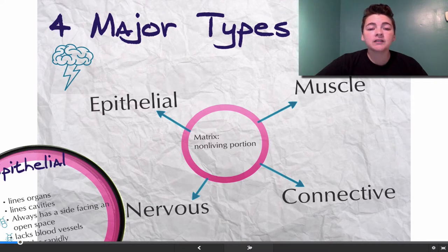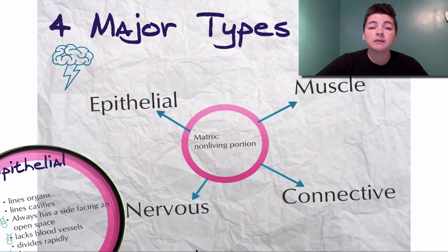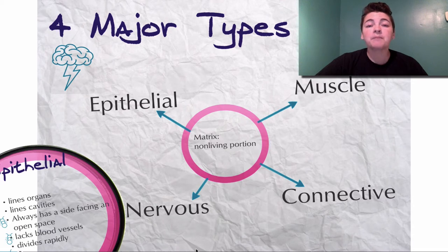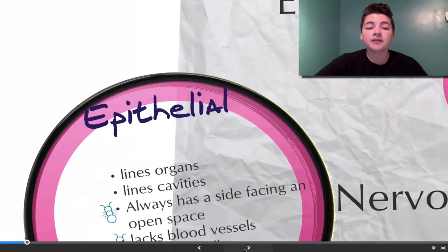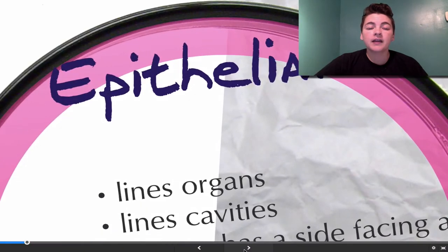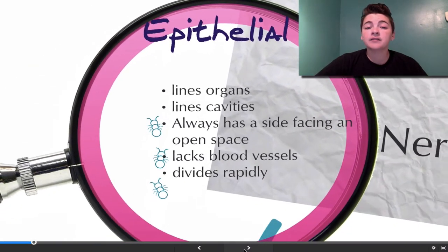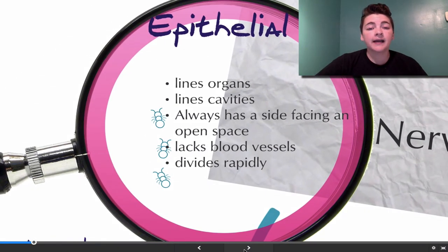The matrix is the non-living portion of tissue. Some tissues, such as connective, have much more matrix than others. Epithelial does not have very much matrix. Epithelial is a tissue that lines organs, lines cavities, and it always has a side facing an open space.